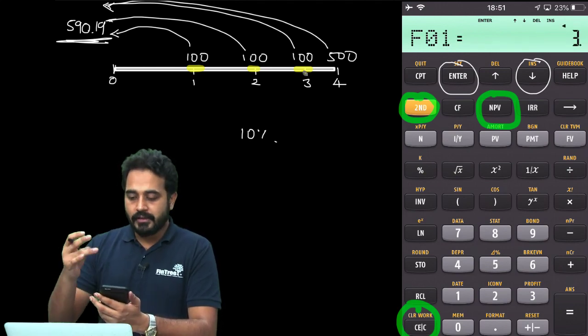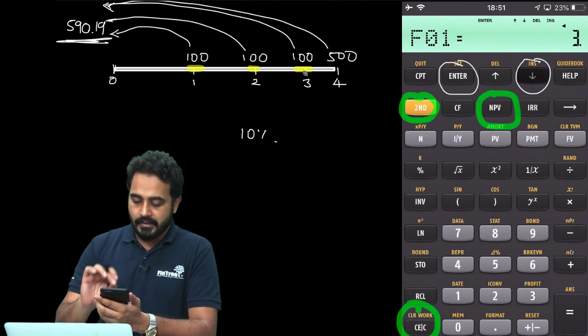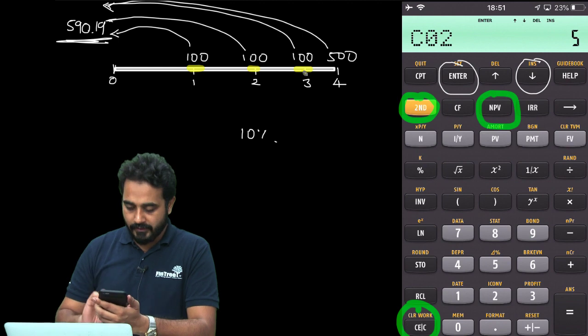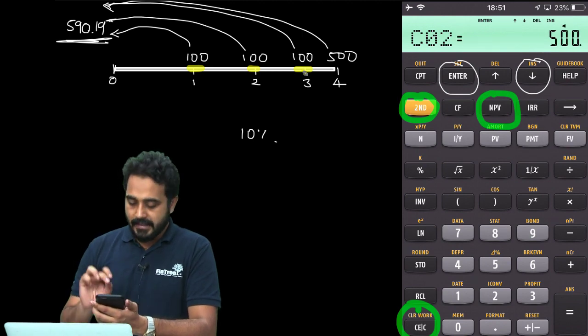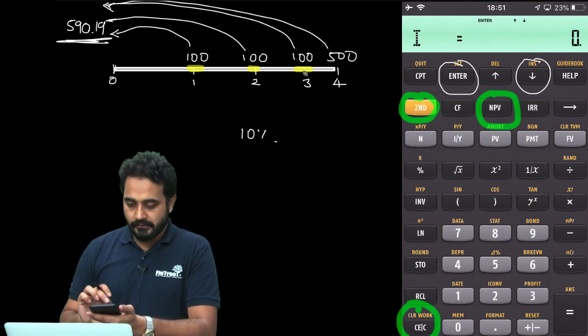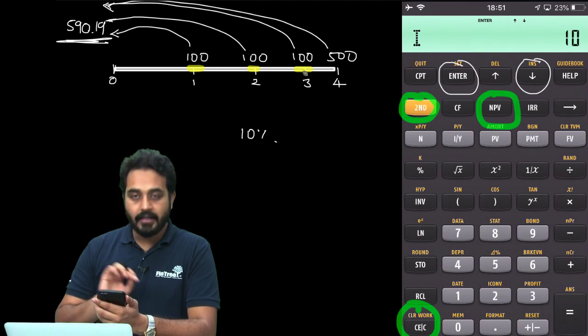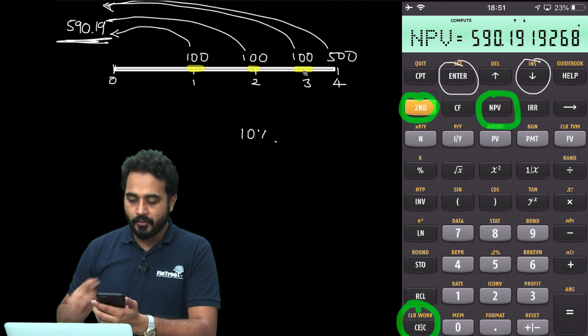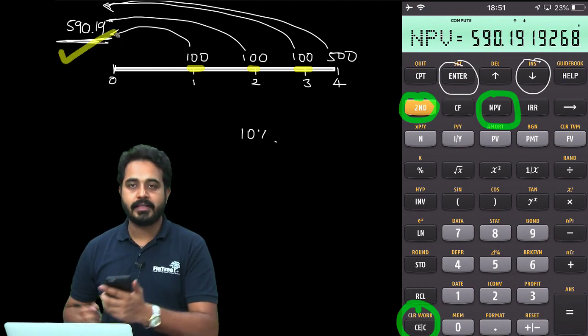So, automatically my calculator understood that 100 is being repeated 3 times. So, the next cash flow is actually the cash flow 4. So, I will say 500, enter. Then I will press the NPV button, 10, enter, downward arrow. It shows me NPV, hit the compute button and you would observe I get the same answer.